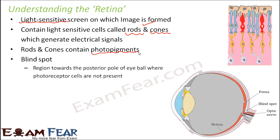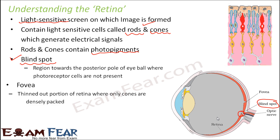Looking at the eye structure, there is a particular region towards the posterior bowl of the eyeball where the photoreceptor cells are not present. That region is known as the blind spot. On the retina, photosensitive cells are present everywhere except in this region, which is exactly towards the posterior end near where the optic nerves originate.